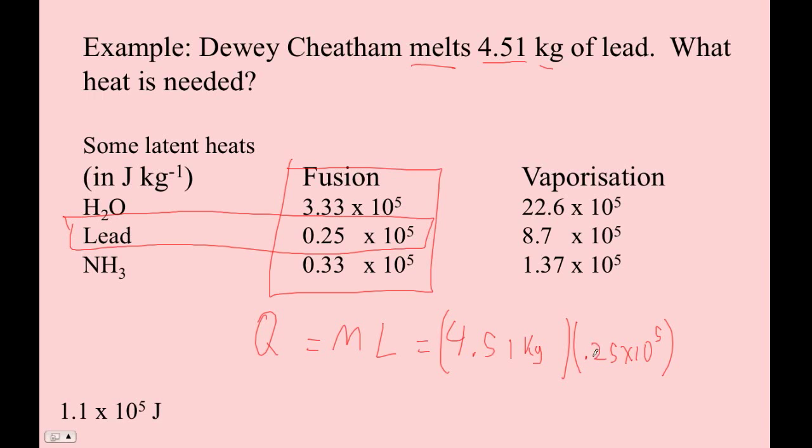That's a really weird way to write it. It should be 2.5 times 10 to the fourth. And this is joules per kilogram. So ultimately, we end up with joules.